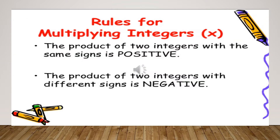Now let's start the rules for the multiplication of the integers. The first rule is that the product of two integers with the same signs is positive. It means that if I am going to multiply 2 by 4, I will get 8 in the answer. Similarly, if I am going to multiply minus 2 by minus 4, then again I am going to get 8 in the answer.